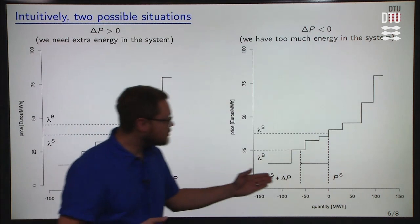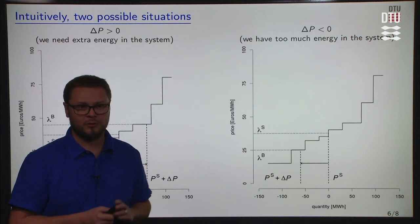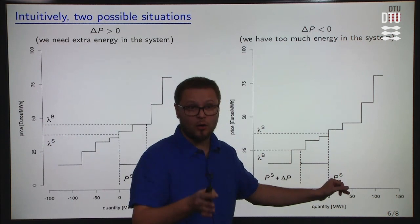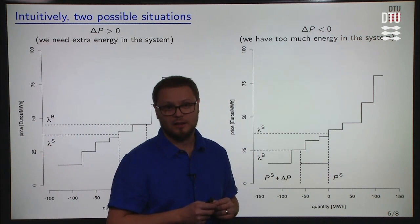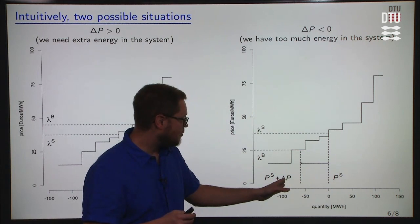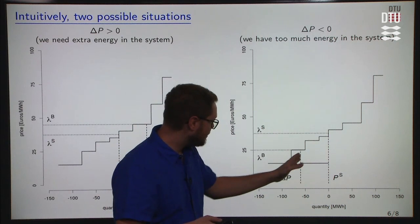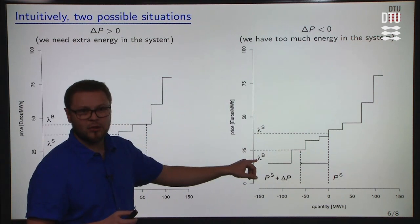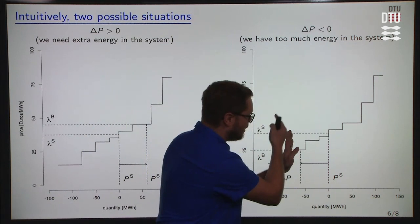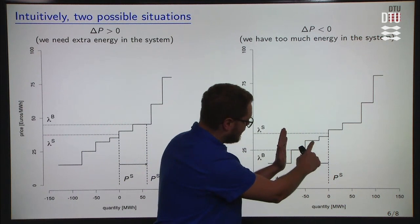In the other case, if there is too much energy in the system, we need downward regulation. The system operator needs to move from P_s down to P_s plus delta p, with delta p being negative. Where the demand line crosses the supply curve we find the balancing price lambda_b. Looking only at the downward regulation side, the first offer is fully scheduled, the second offer is fully scheduled, and the third offer is partially scheduled up to that point.